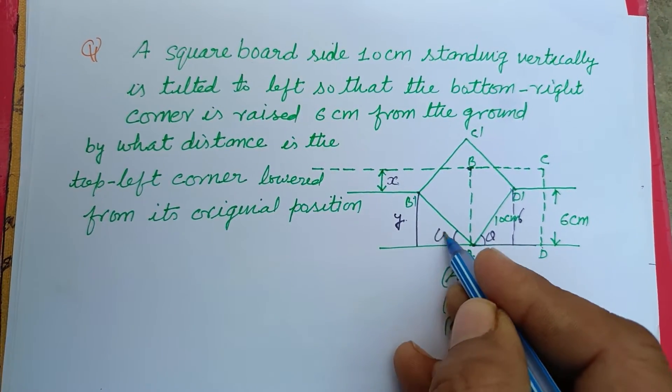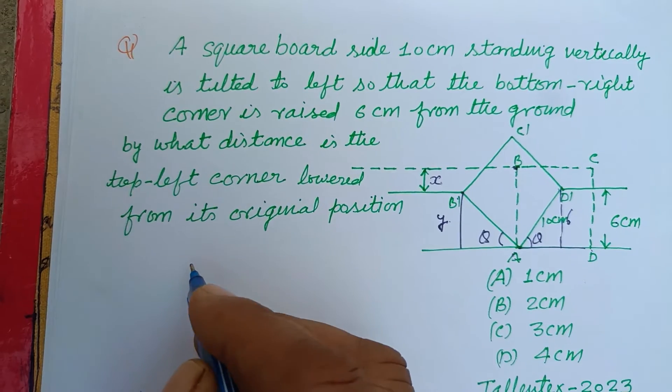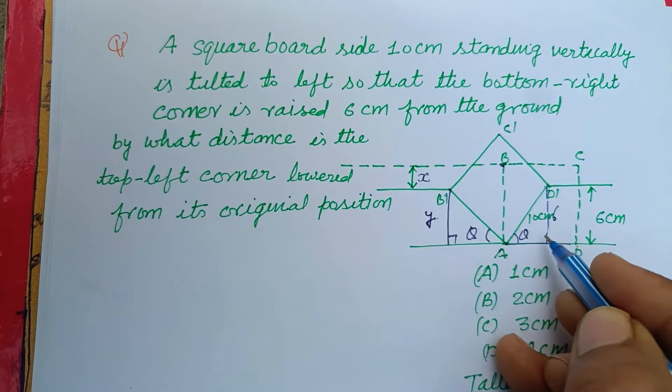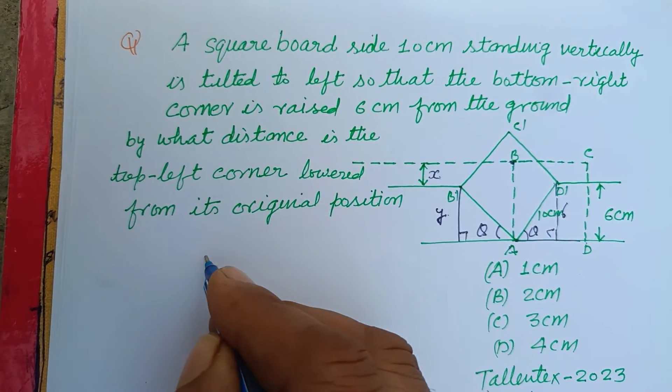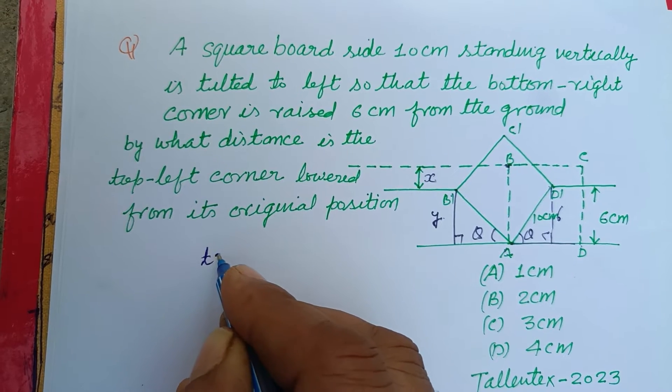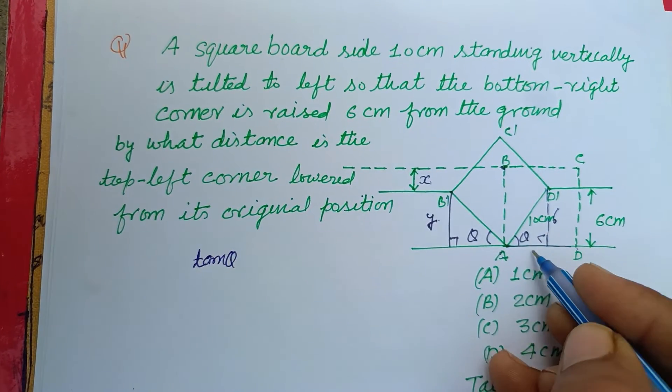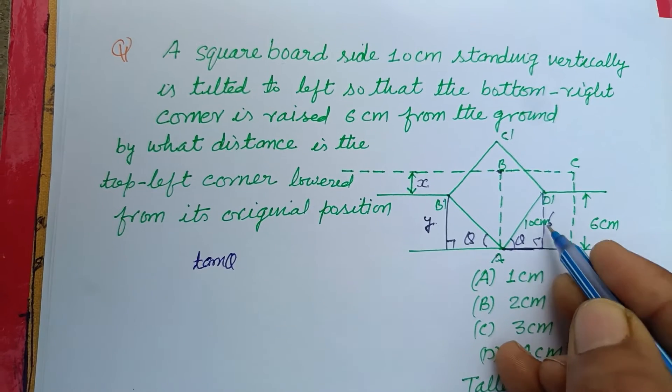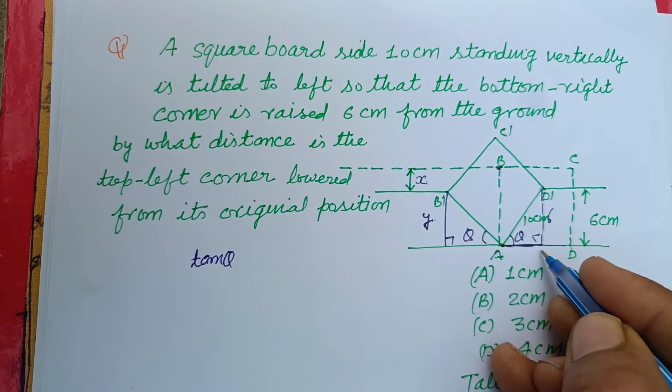So, and this is 90, this is 90. So tan theta, if we find out this part, this will be, let this be P. So AP is how much?